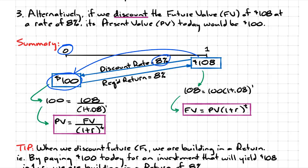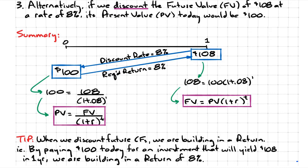8%. So in this context, the 8% would be referred to as the discount rate. You see why we discount cash flows? We discount cash flows so that we can build in a return.